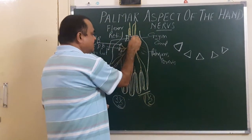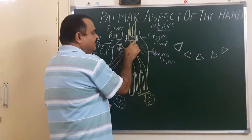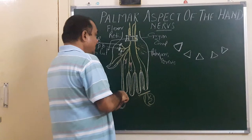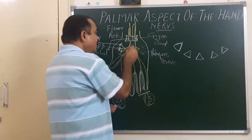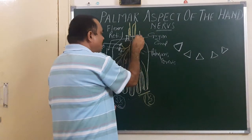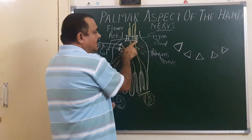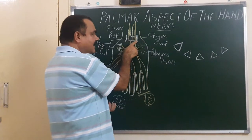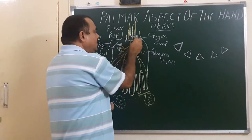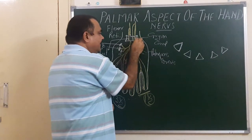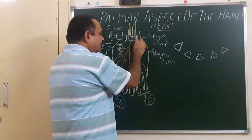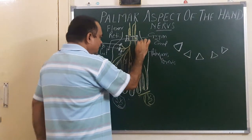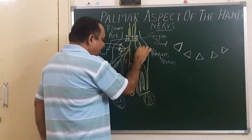The ulnar nerve gives a deep branch. This deep branch passes deep to the pisohamate ligament, through Guyon's canal. It then turns laterally along the concavity of the deep palmar arterial arch.